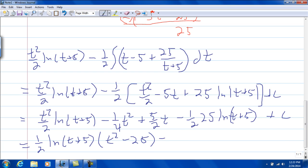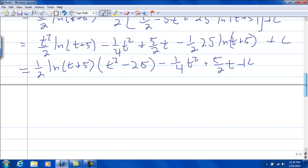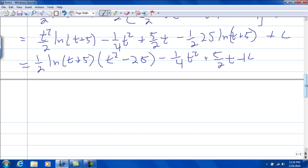We have minus 1 fourth t squared, and then plus 5 halves t plus c. You can go one step further if you would like, you could factor 1 fourth out of the whole thing, it's your call.